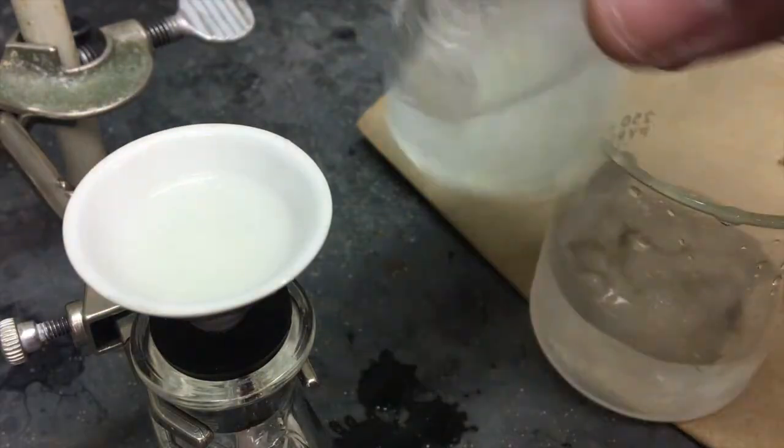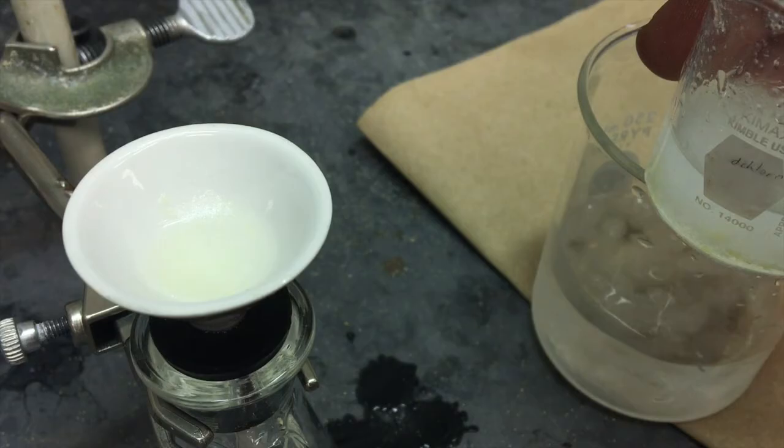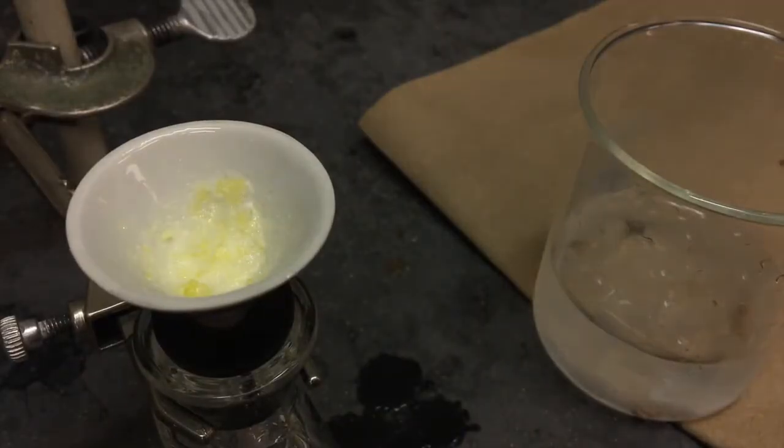I recommend using the Hirsch funnel. That's the little ceramic one. This takes a little bit of time, but in the end you end up with a white or yellowish powder.